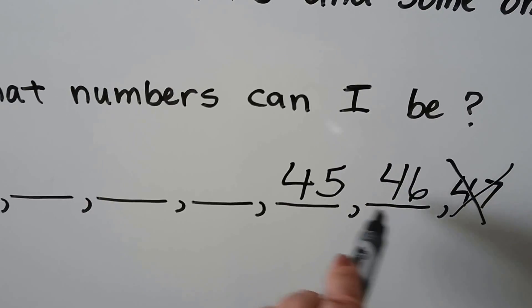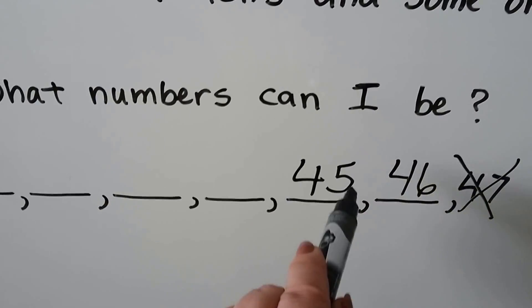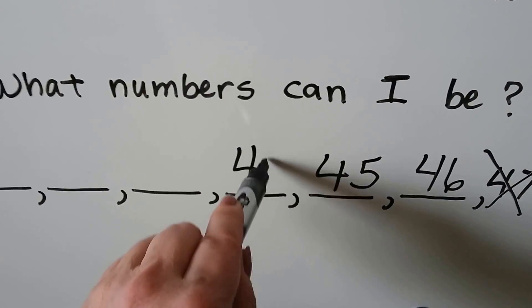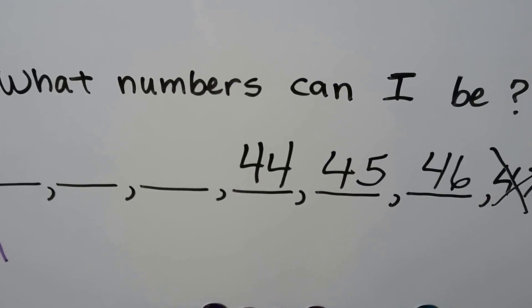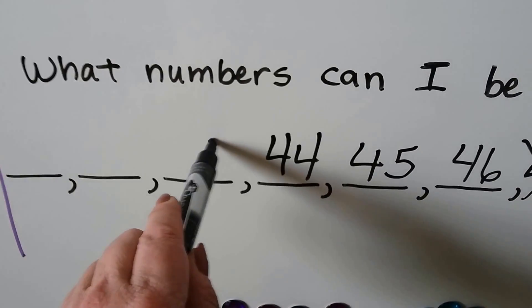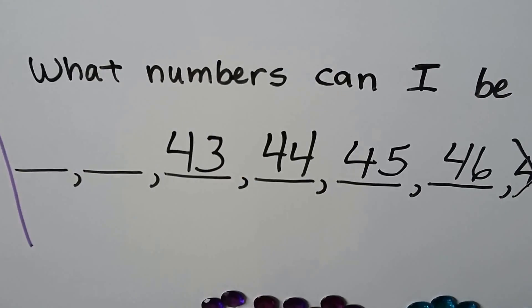The number that comes in front of 46 is 45. See how the ones place is getting smaller? It has four tens and some ones. The number that comes before 45 is 44. It has four tens and some ones. We're going to go one smaller with the ones place, so that'll be a 3. It's got four tens, so it's 43.